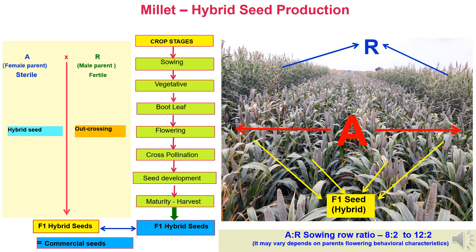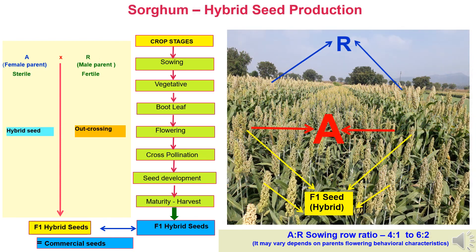In millet, A and R lines are used. A line is male sterile and R line is fertile. Millet is a highly cross-pollinated crop where complete natural or wind pollination takes place. A and R lines are used in a ratio depending on male characteristics, generally varying from 8:2 to 12:2. In sorghum, it is similar to pearl millet — A line is complete male sterile, R line is fertile, also a cross-pollinated crop with female to male row ratio generally from 4:1 to 6:2.